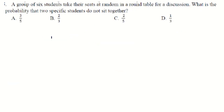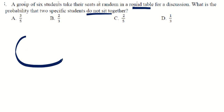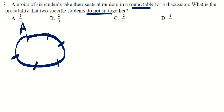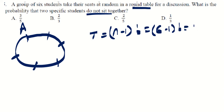Next question: six students sit at random at a round table. What is the probability that two specific students do NOT sit together? Total circular arrangements = (6−1)! = 5! = 120.